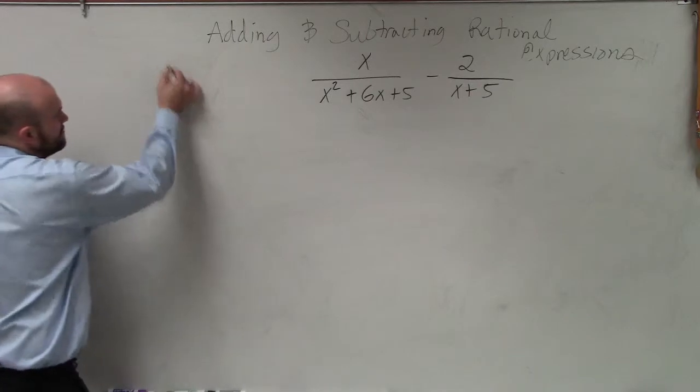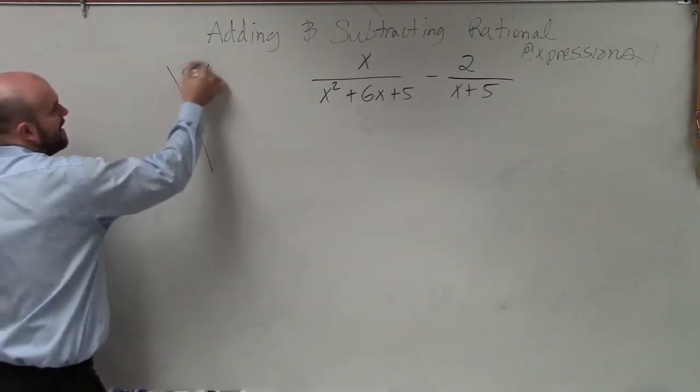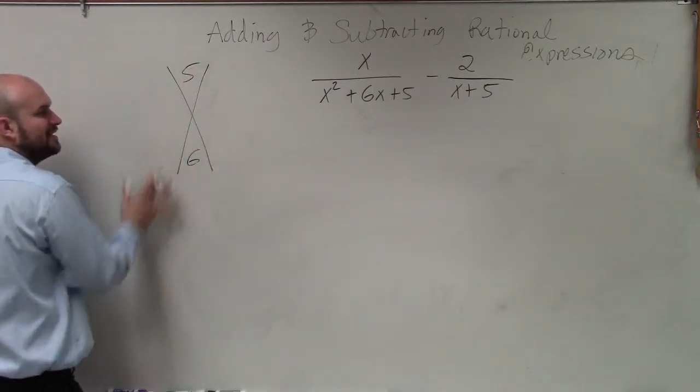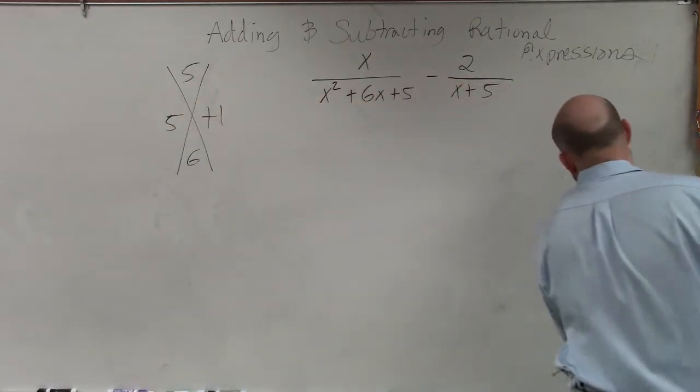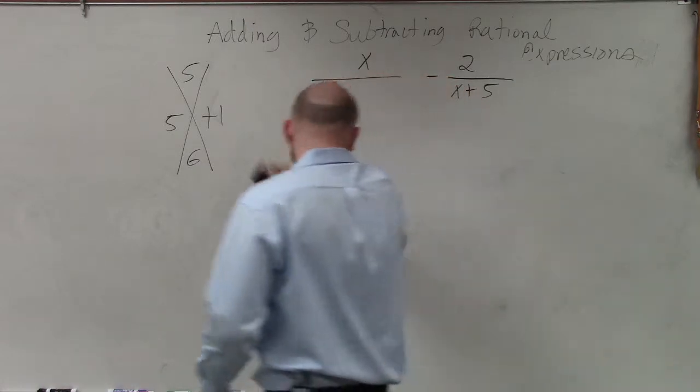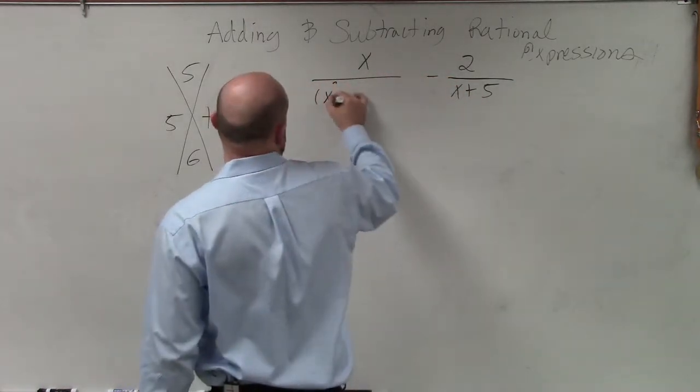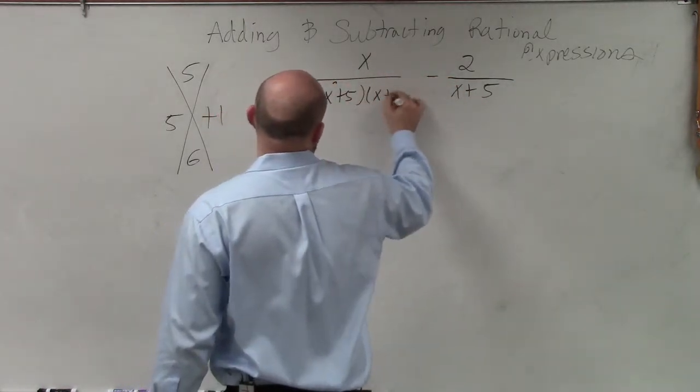If I was going to factor this, by going through my 5 and 6, I say what two numbers multiply to give you 5 and add to give you 6? 5 and 1. So I'm just going to save a little space and time and rewrite this in factored form: (x+5)(x+1).